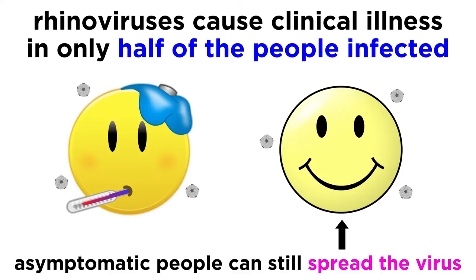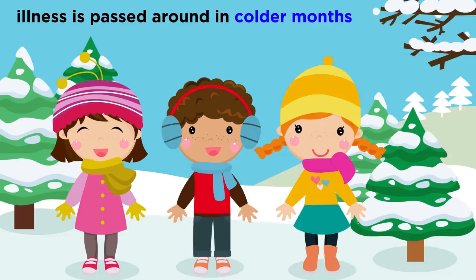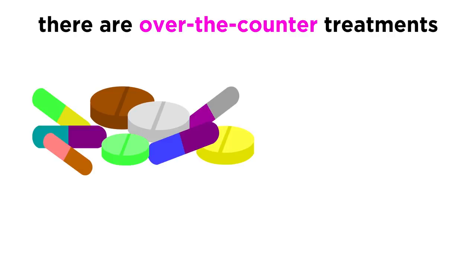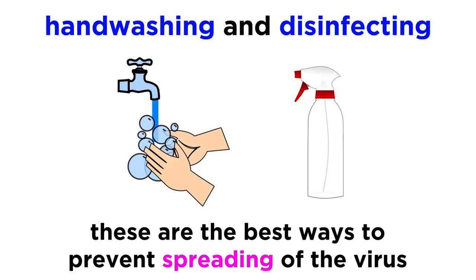For the most part, infants and children have the highest rates of rhinovirus infection, though they can spread these infections to their family members pretty easily. And especially during the colder months, it's not surprising for rhinoviruses to be passed around in school or other social settings. When it comes to treatment, there are tons of over-the-counter remedies that help treat the common cold, but rhinoviruses aren't a solid candidate for vaccination since there are so many serotypes. Hand washing and disinfecting commonly handled items is the best way to prevent spreading of the virus.